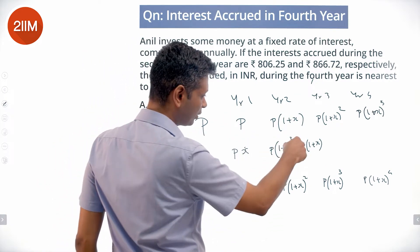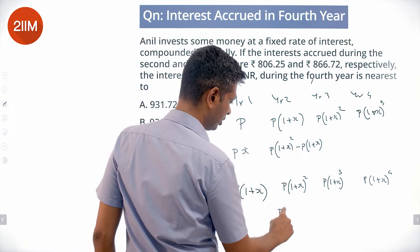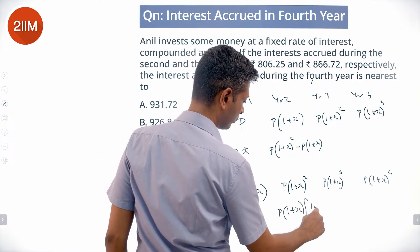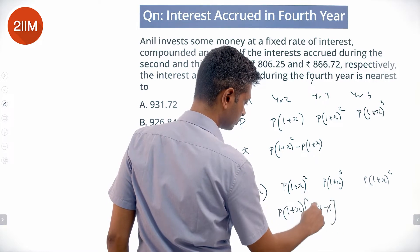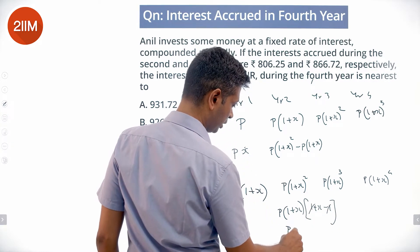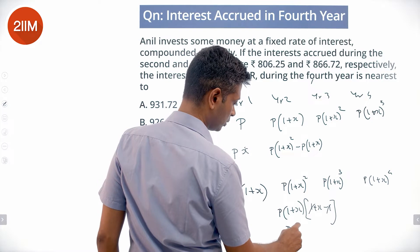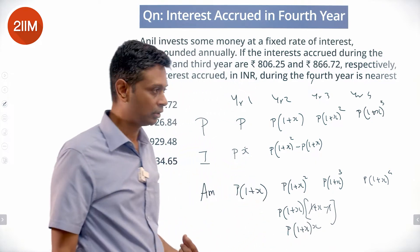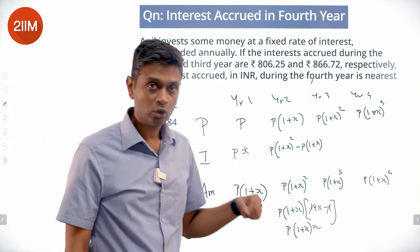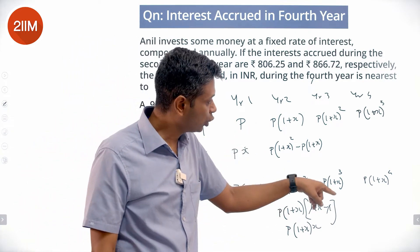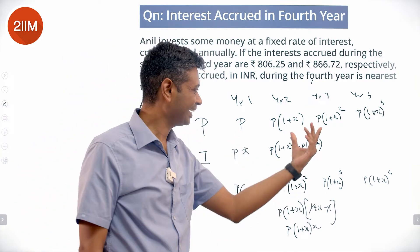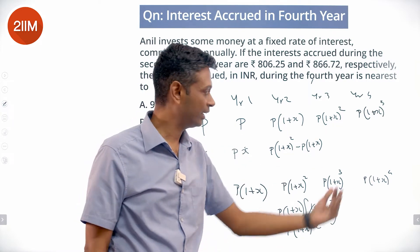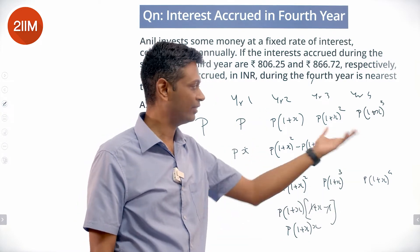P(1+x)² minus P(1+x) equals P(1+x)·[(1+x) − 1], which is P·(1+x)·x. For year 3, it's P(1+x)³ minus P(1+x)², and extracting P(1+x)² outside leaves x remaining. Similarly, for year 4 you can extract P(1+x)³ outside and x remains.